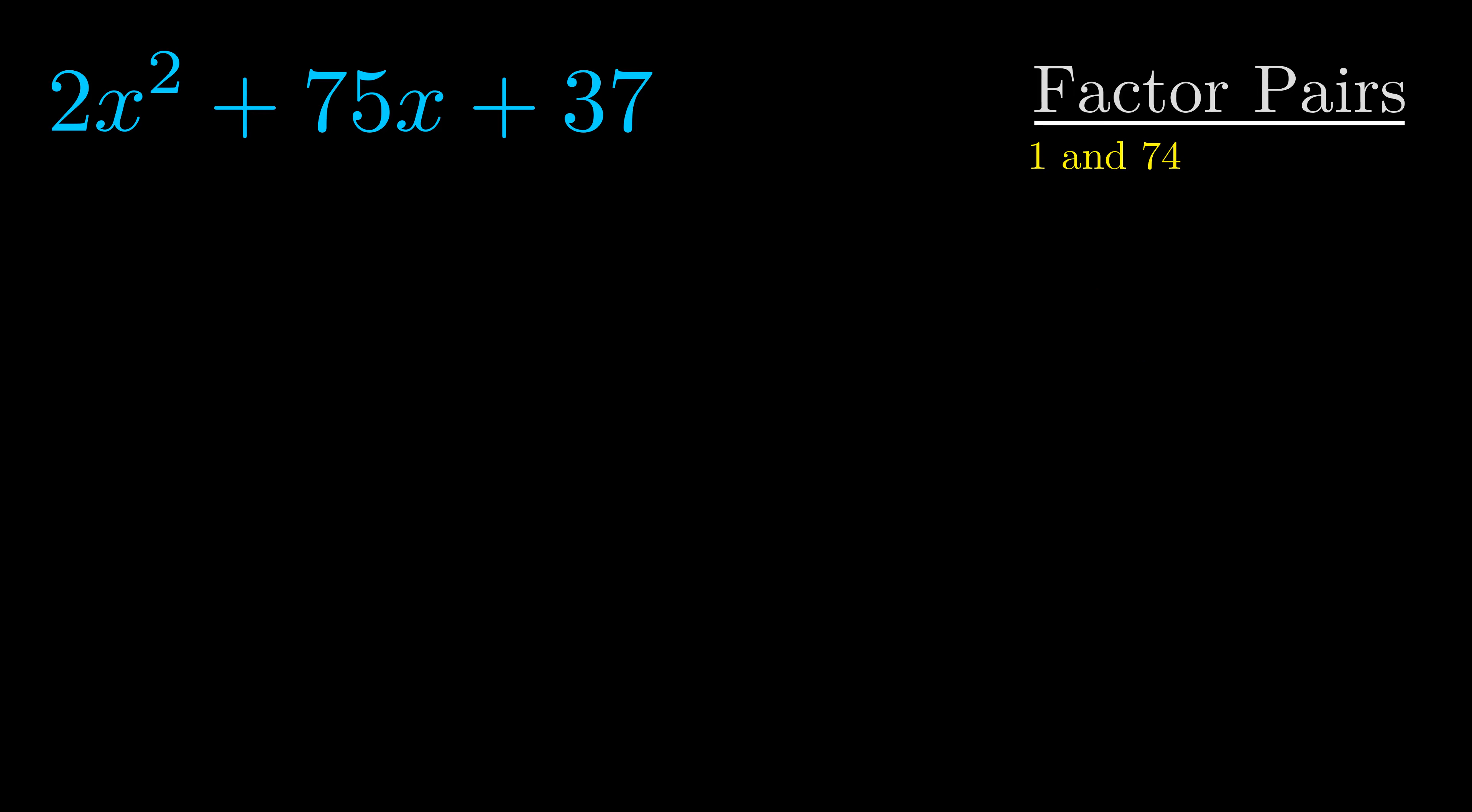Once we have this factor pair, what we want to do is use it to split up the b value.